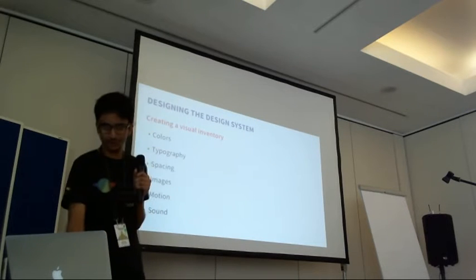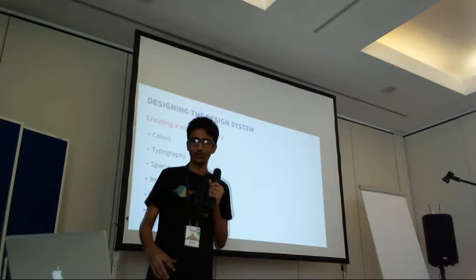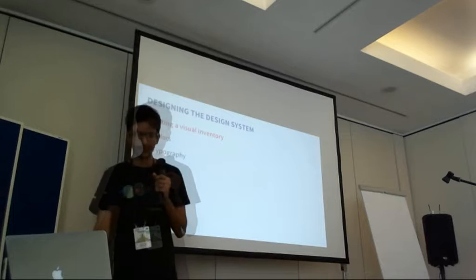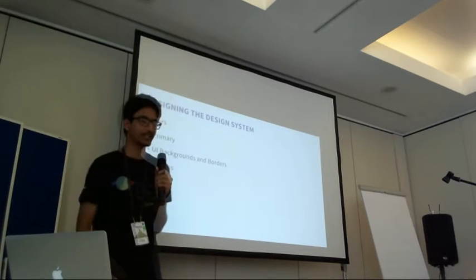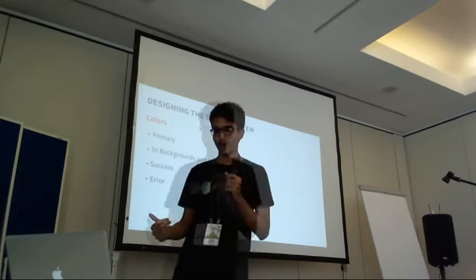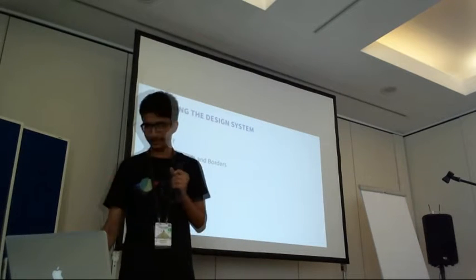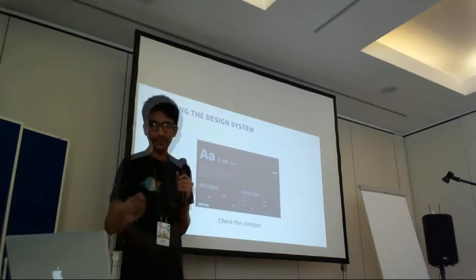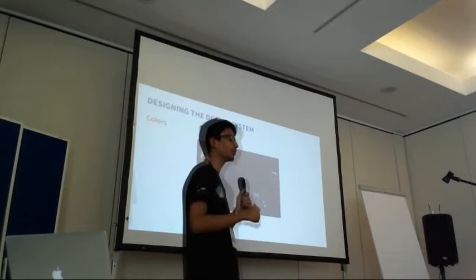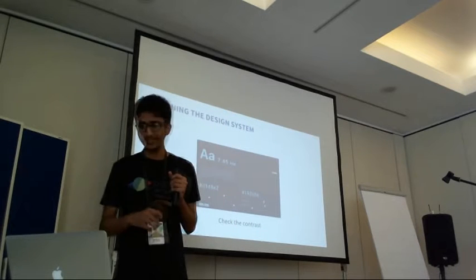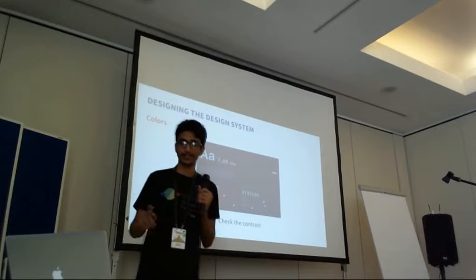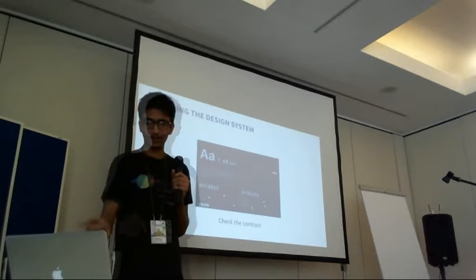Once you've done the audit and reduced the attributes, these are the things you need in your visual inventory. First, colors: there will be a brand primary color, UI background colors, light colors for borders, and success, error, and warning colors. While doing the color check, you must ensure the contrast is right for accessibility. There's a tool called Colorable where you can check the accessibility of background and text colors in real time.